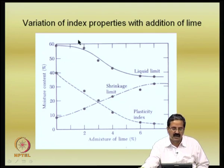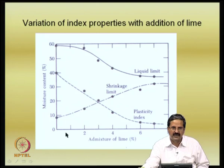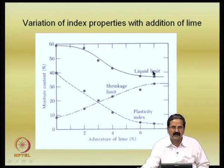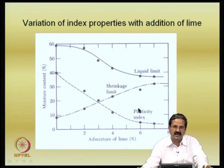For the same soil, the range of water contents at which it can show variations was from 60 to 9 — that is 51 percent range — which is too big. But after treatment, the liquid limit is about 40 and the shrinkage limit is quite high. What it means is that water content variations will not influence the response too much — a very important improvement.